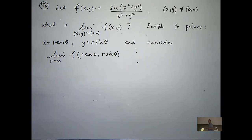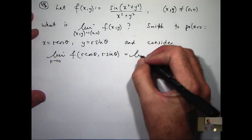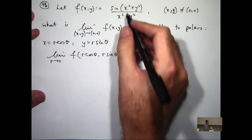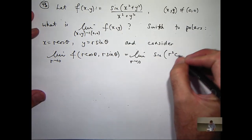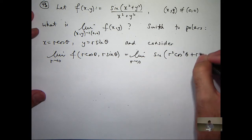At the top we're going to get sin(r²cos²θ + r²sin²θ).